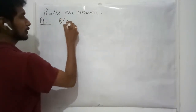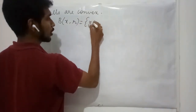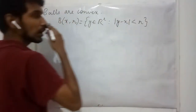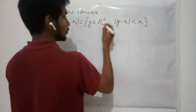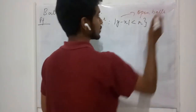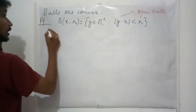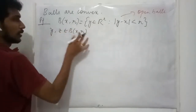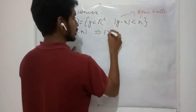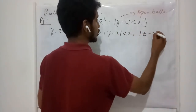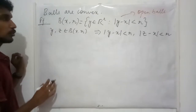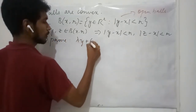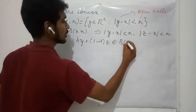A ball centered at x with radius r is the collection of points in Rk such that the absolute value of y minus x is less than r. The proof is specific for open balls, and later we may extend this idea to closed balls as well. Let me take two points y and z in this ball, meaning the absolute value of y minus x is less than r and the absolute value of z minus x is also less than r. In order to prove this ball is a convex set, we need to prove that lambda y plus 1 minus lambda z is also inside this ball.